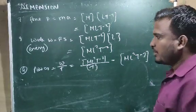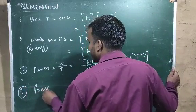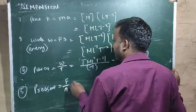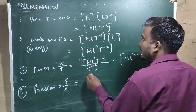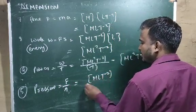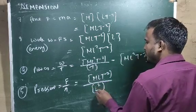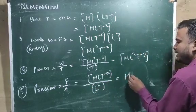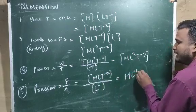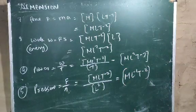Next is dimensional formula for pressure. Pressure equals force per unit area. The dimensional formula for force is M L T⁻² and for area is L². So L goes up and 1 minus 2 gives L⁻¹, and T⁻². The result is M L⁻¹ T⁻². This is the dimensional formula for pressure.